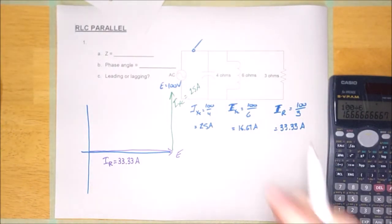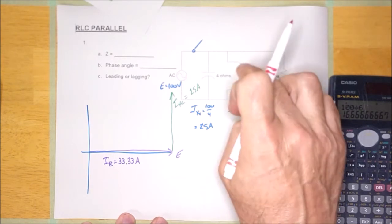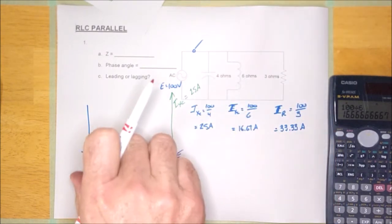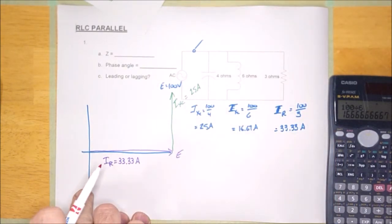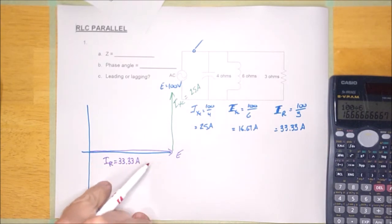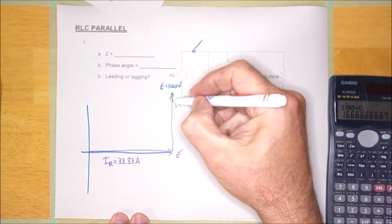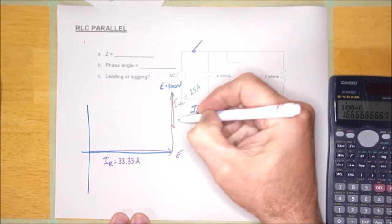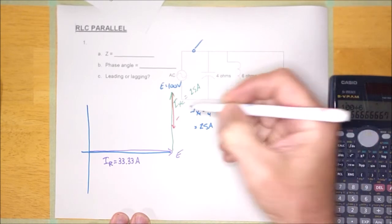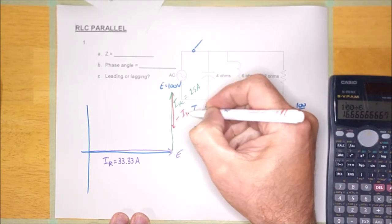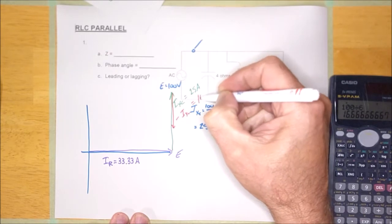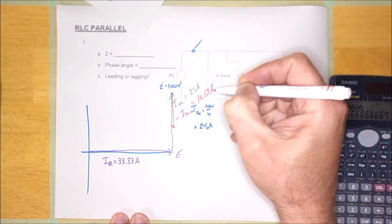The last phasor I'm going to draw is IXL. That is an inductor. Inductors cause the current to lag by 90 degrees, so they're going to be clockwise. It'll sit right down here. But I'm going to move it tip to tail, and so it'll sit right here. And that red line right there is going to be IXL, and it's going to be equal to 16.67 amps.